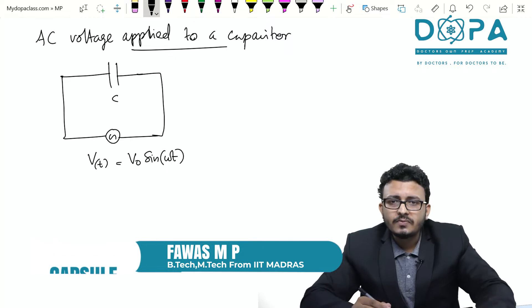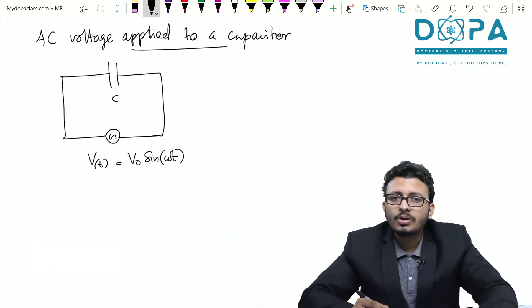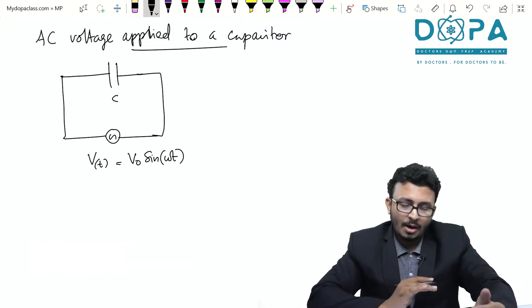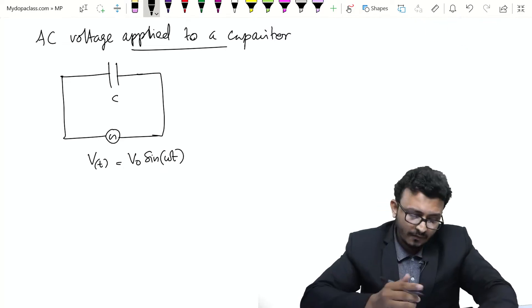So the applied voltage is V0 sin ωt. This is a sinusoidally varying voltage. When you apply this to a capacitor we need to find out the current.